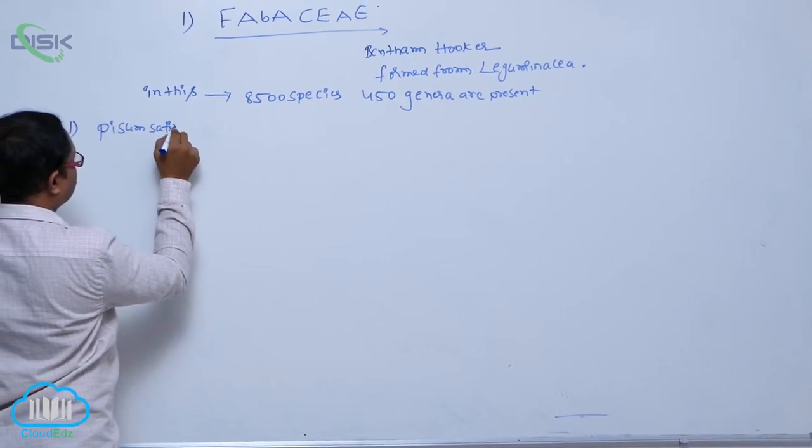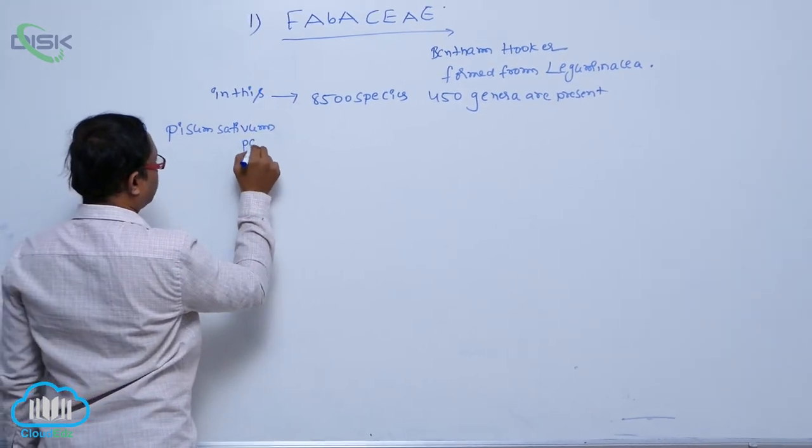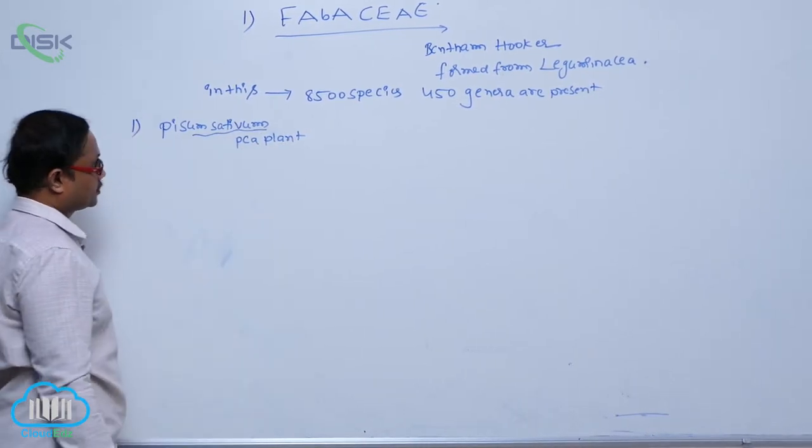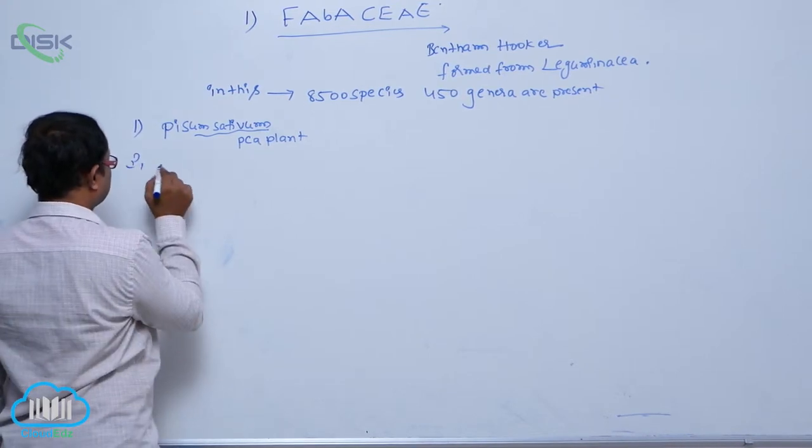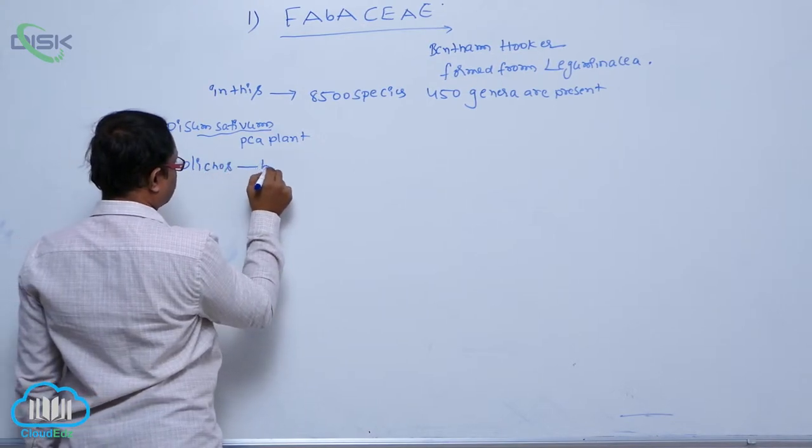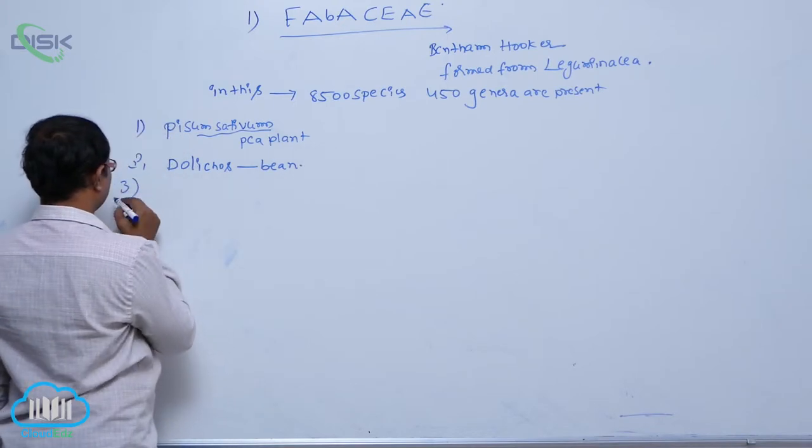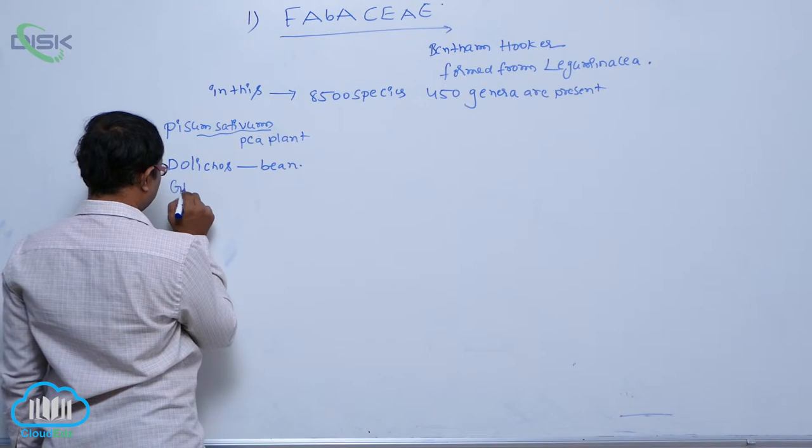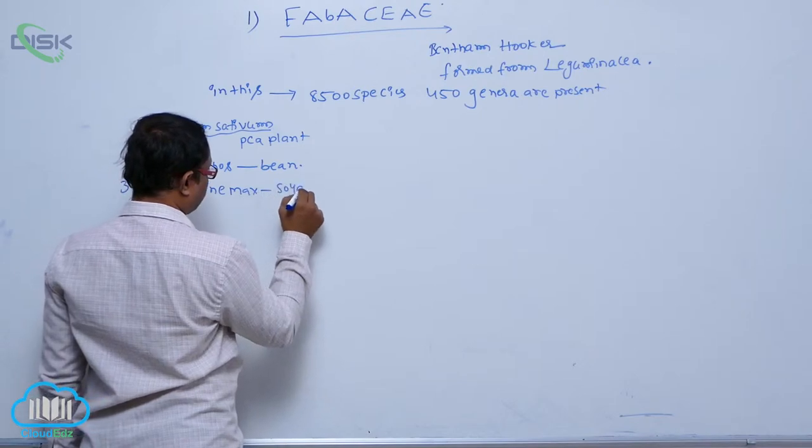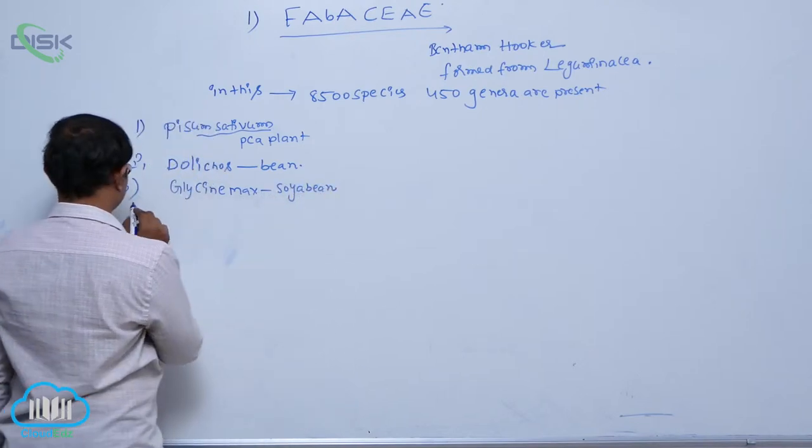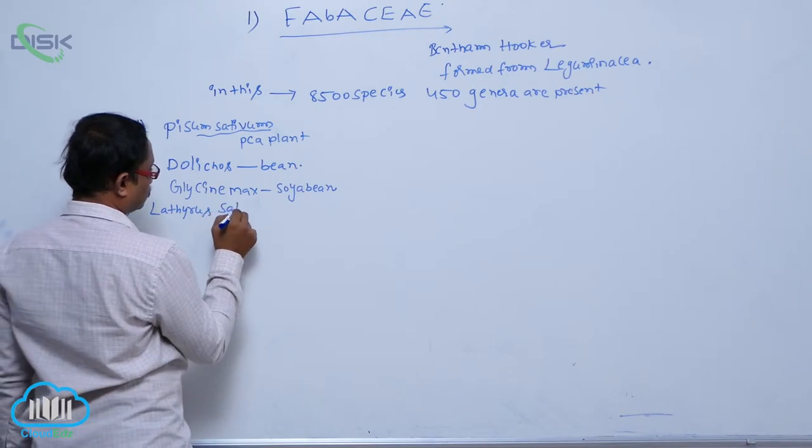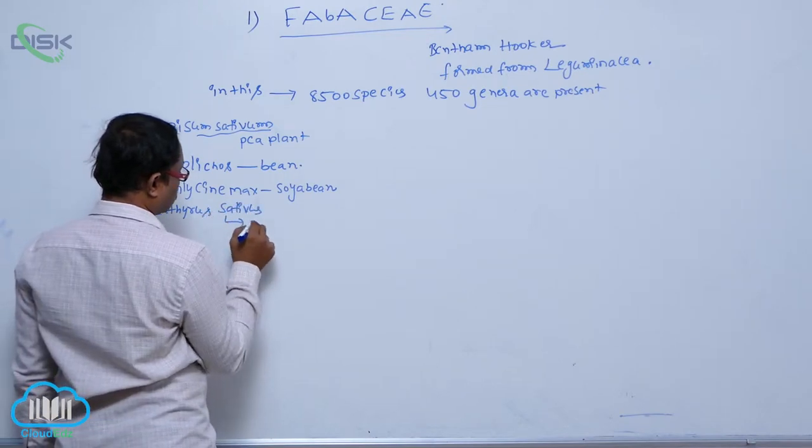Pisum sativum, pea plant. These are the scientific names present in the Latin language, there is a common name pea plant. Second one is Dolichos, it is known as a bean. Third one is Glycine max, soybean. Lathyrus sativus, garden pea.